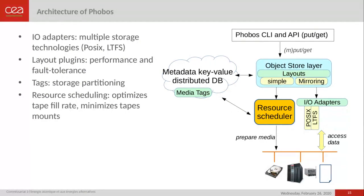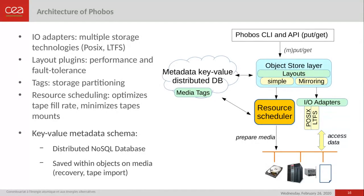Phobos has a distributed architecture. One key component is a resource scheduler that optimizes tape feed rate and minimizes unnecessary tape mounts — critical for performance when using a tape library. The Phobos metadata management is based on a distributed key-value schema, allowing use of widely scalable distributed NoSQL databases such as MongoDB or any key-value distributed tool. For recovery, tape import metadata is also saved within objects on media.